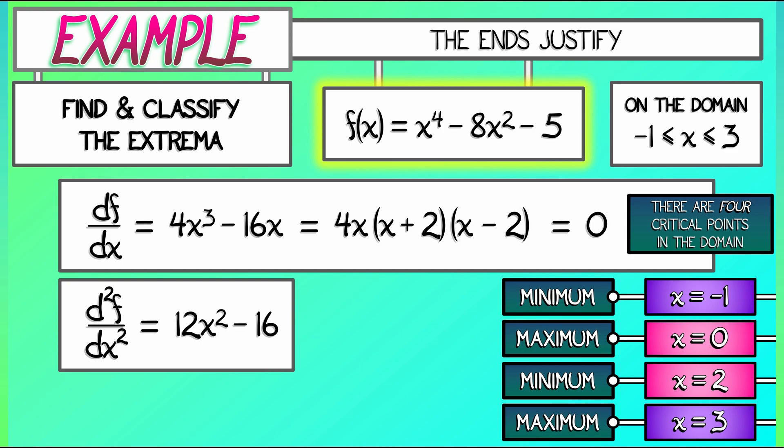This can be checked by plugging in the values into the original function f. At x equals 1, we get 1 minus 8 minus 5, that's negative 12. When x equals 0, we get negative 5, clearly. When x equals 2, we get 16 minus 32 minus 5, that is negative 21. And then when x equals 3, we get 81 minus 72 minus 5, that's positive 4. So now we can see the difference between local maxima and minima and global maxima and minima.